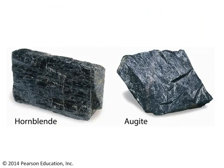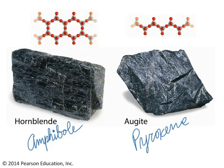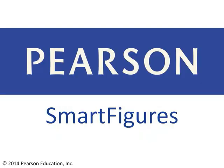Let's see how much you remember. Here's hornblende and augite — what's the silicate structure of these minerals? Remember that hornblende is an example of an amphibole, and augite is an example of a pyroxene. Hornblende is an example of a double-chained silicate structure, and augite is an example of a single-chained silicate structure. Thanks very much for your attention. This concludes another smart figure.